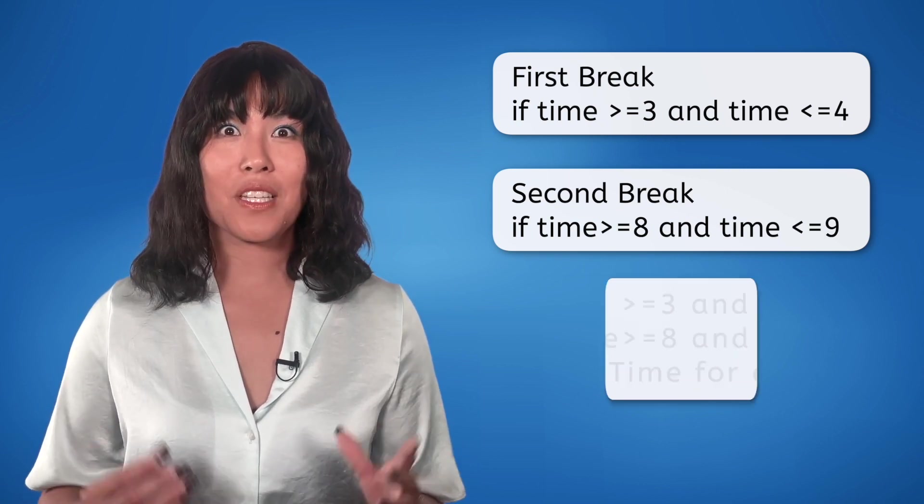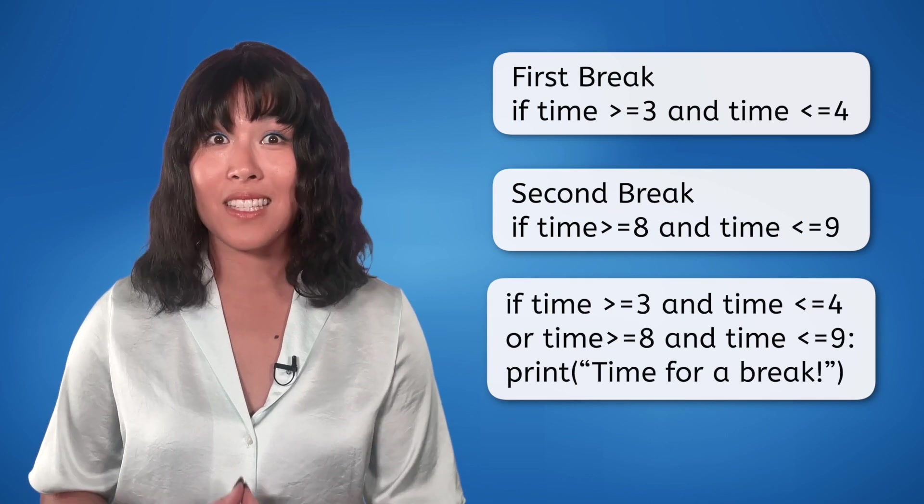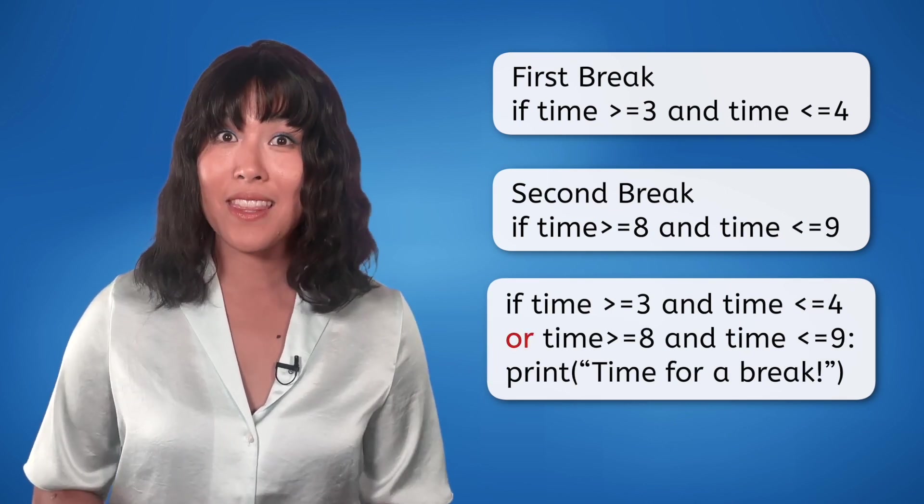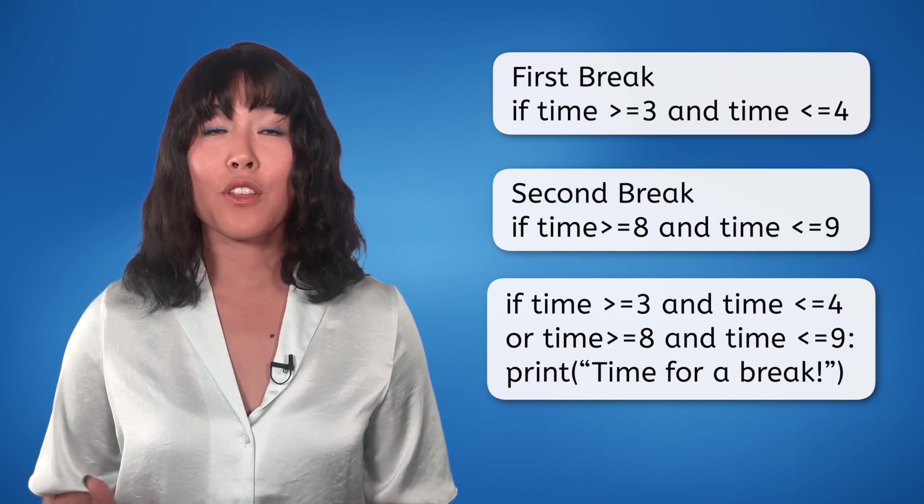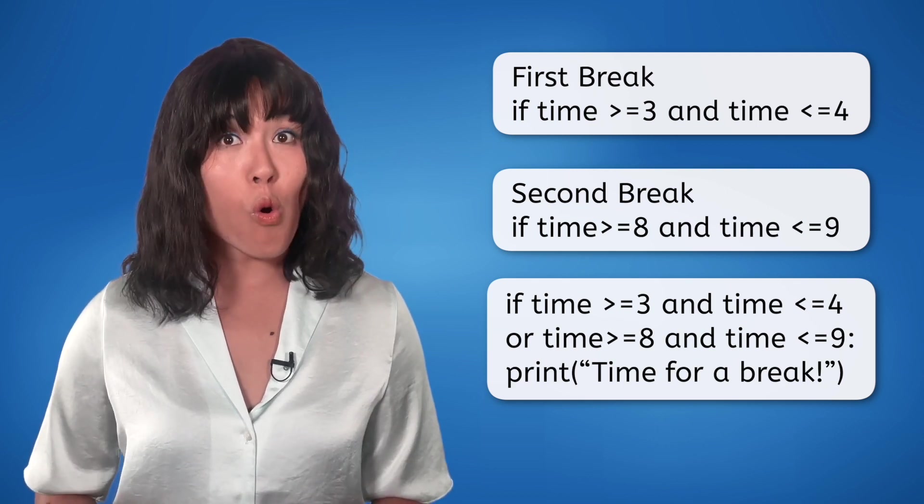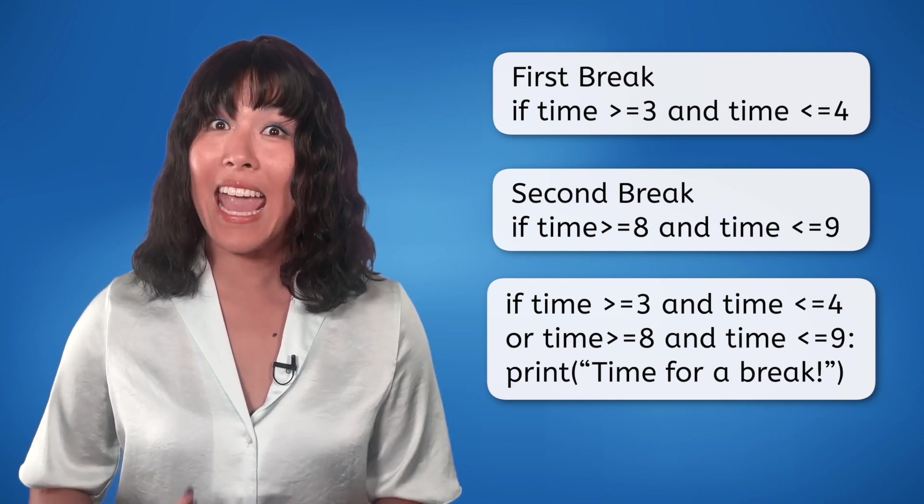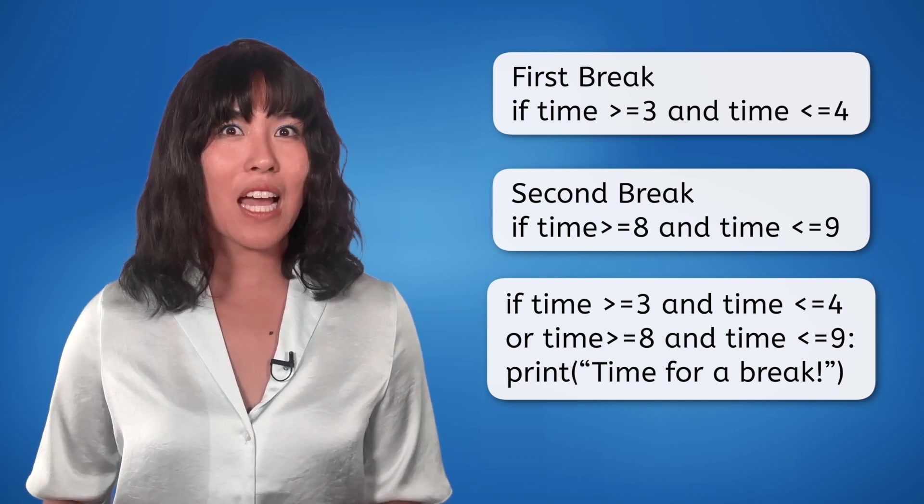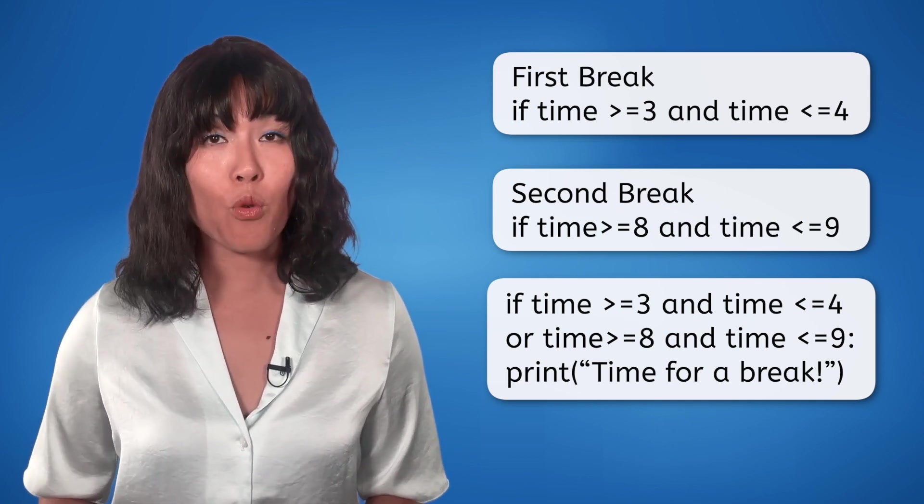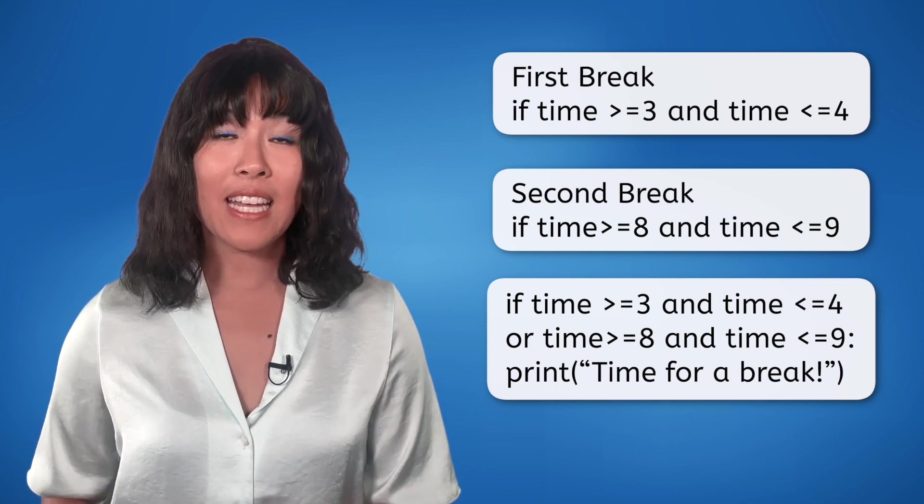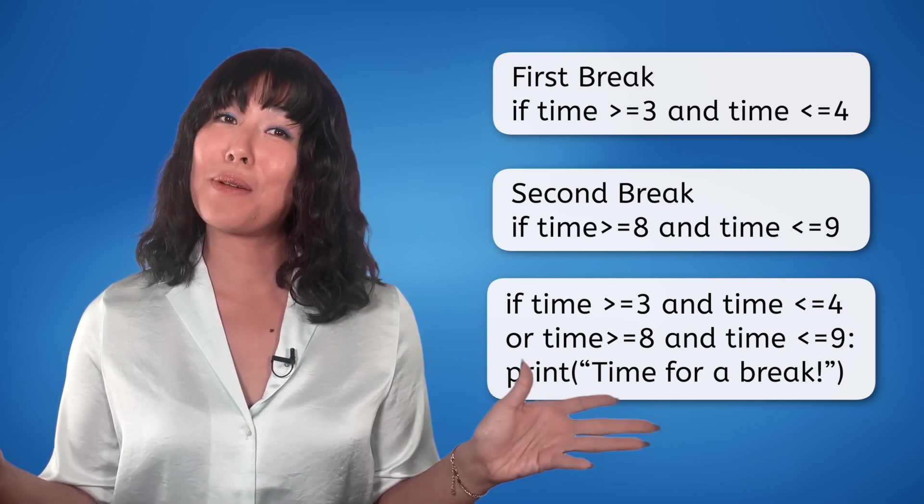Now, since both time ranges can't happen at the same time, we use OR to combine them. Either my break is between 3 and 4, OR my break is between 8 and 9. If the time is greater than 3 and less than 4, or the time is greater than 8 and less than 9, I'll take a break!